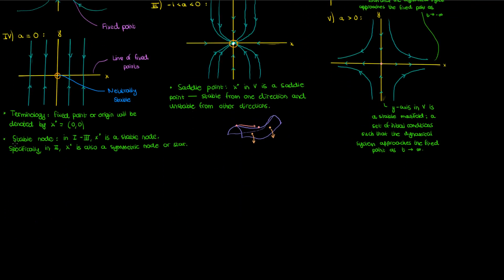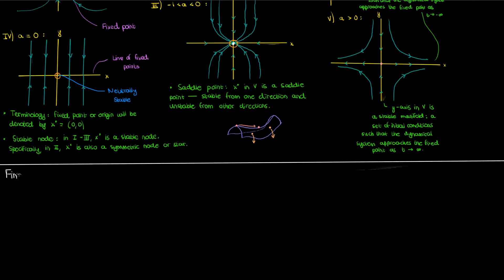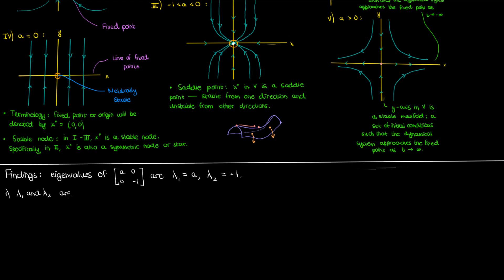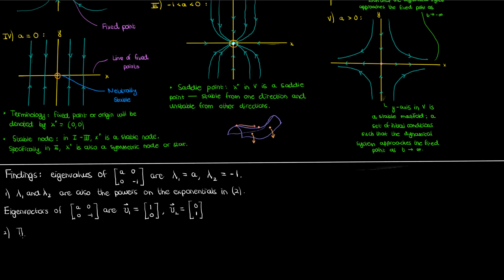Now let's look at some important findings. The first is that the eigenvalues of the coefficient matrix of this dynamical system are just a and negative 1 — the same as the powers on the exponential solution in equation 2. The second finding is that the eigenvectors of this matrix are (1, 0) and (0, 1), which are the exact same vectors that show up in our solution in equation 2.